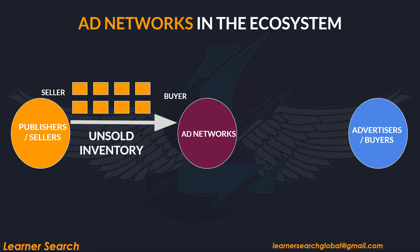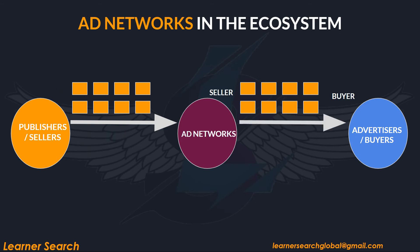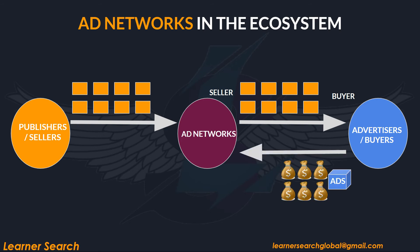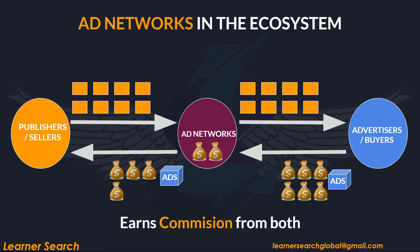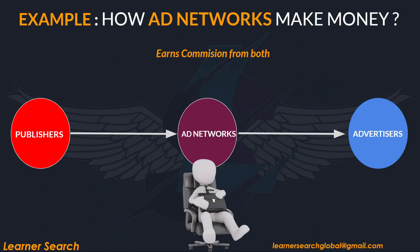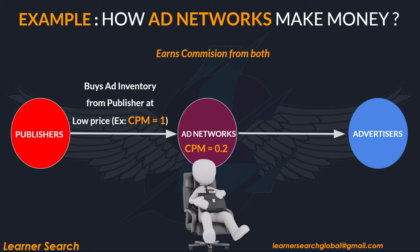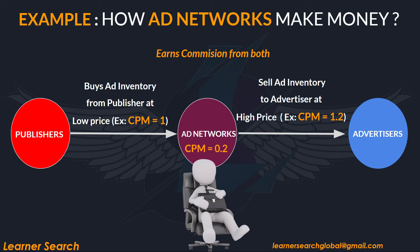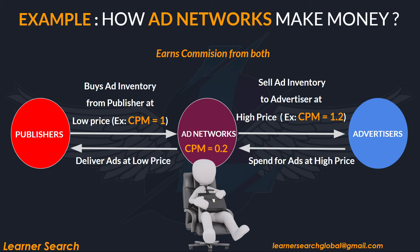Ad networks purchase inventory at a low price from publishers, aggregate it, and sell it to advertisers who are looking for it. Now these ad networks act as sellers and sell that purchased inventory to advertisers at a high price. In return, advertisers send creatives and payment for the inventory to ad networks. Ad networks then take some commission from the amount and send the remainder to publishers. For example, an ad network purchased ad inventory from one publisher at a CPM of $1. Let's assume a commission value of $0.20 is added, so ad networks sell it to advertisers at a CPM of $1.20. From the advertiser's point of view, ad networks charge advertisers the high rates, take some commission from it, buy ad inventory from publishers at a lower rate, and serve the advertisements as required.